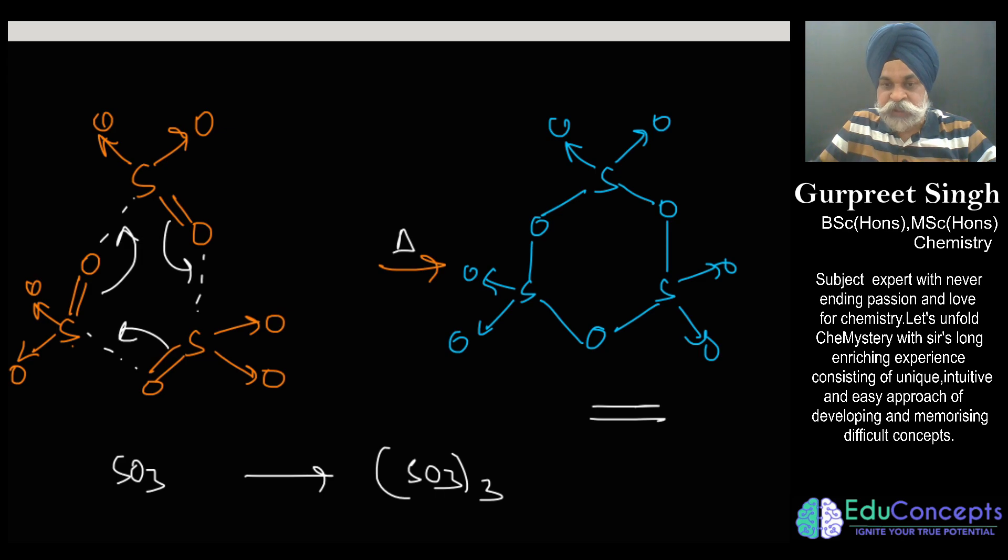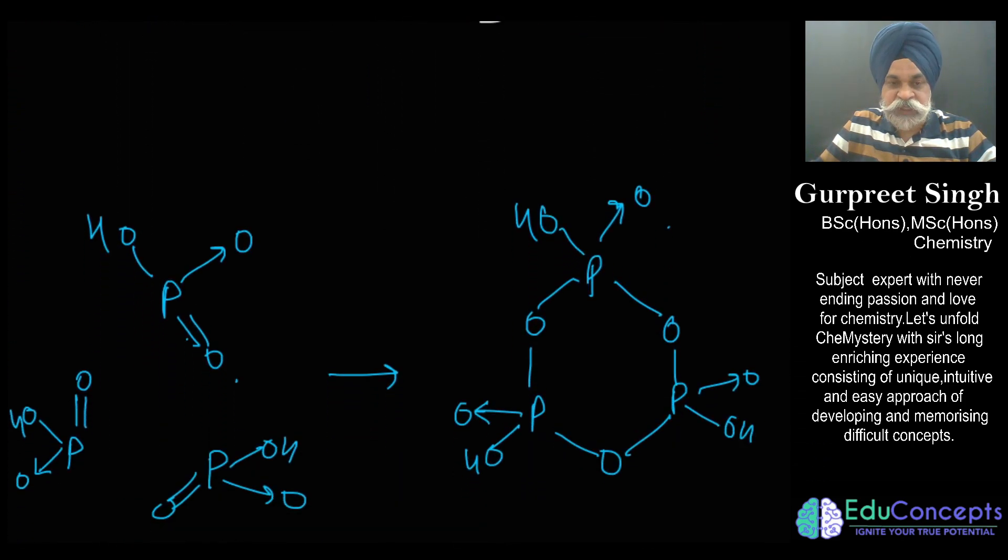Same is the viewpoint for metaphosphoric acid. Metaphosphoric acid also on heating may undergo trimerization because of the cyclic transition state which is giving you a six-membered ring. So this is HPO3 thrice.